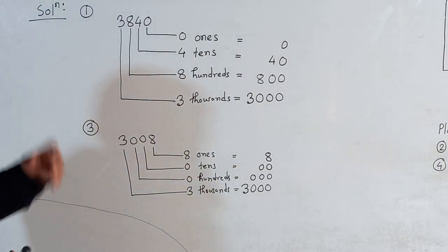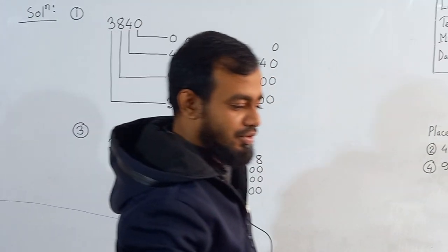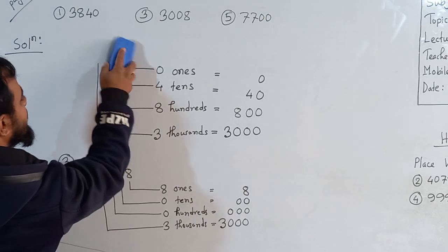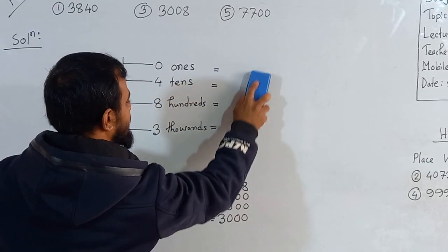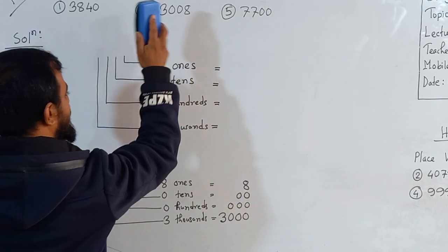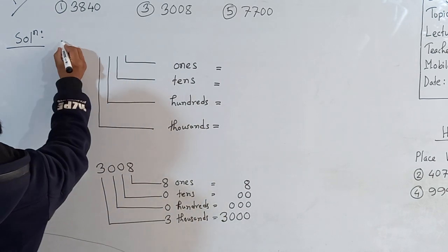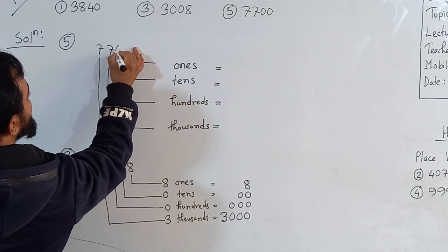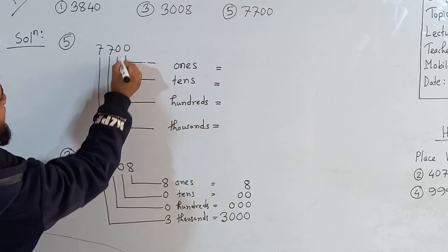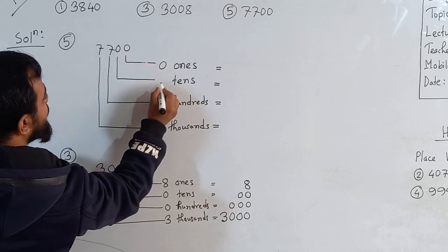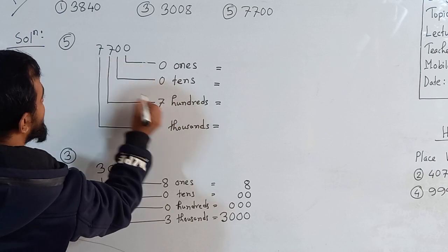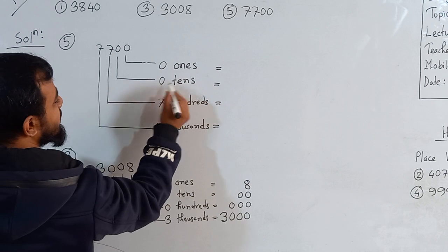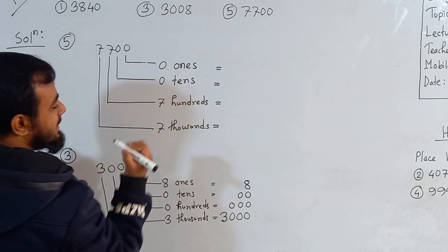Now I'm going to solve question number 5. The given number is 7700. Place the digits from the right: 0, 0, 7, 7. Now write down the place value names: 0 is 1's, 0 is 10's, 7 is 100's, 7 is 1000's.